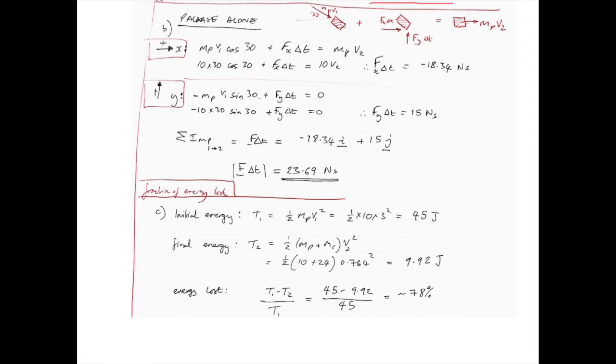And the final kinetic energy, which is the combined mass times the speed of both objects, which is just under 10 joules, we can work out the energy lost, i.e. the difference of the initial to the final state of energy divided by the initial, and it tells us that we lose around 78% of the energy.